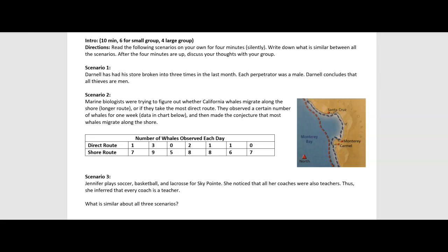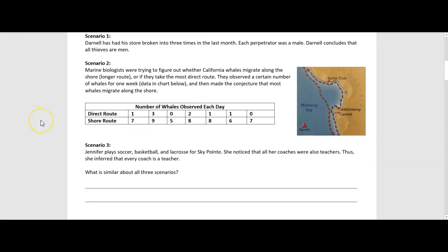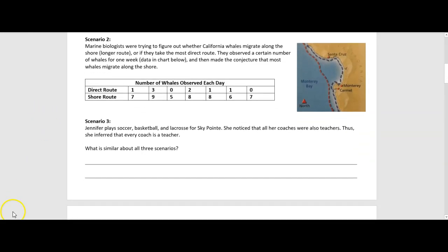So Darnell makes this conclusion based on the three instances that the store was broken into. The marine biologists are going to make their conjecture based on their observations. And Jennifer, based on her experience with her own teams, concludes that if all her coaches were teachers, then every coach must be a teacher. So we can say that a conclusion was being made based on prior examples and or data. Let's move on.